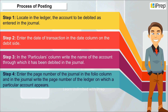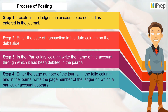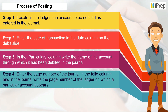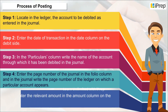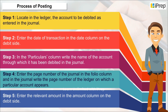Step 4 — Enter the page number of the journal in the folio column, and in the journal, write the page number of the ledger on which a particular account appears. Step 5 — Enter the relevant amount in the amount column on the debit side.